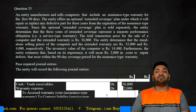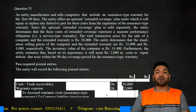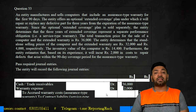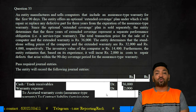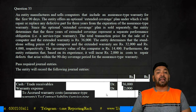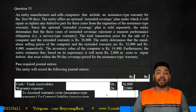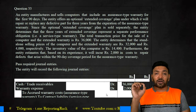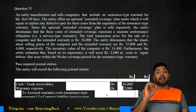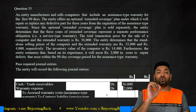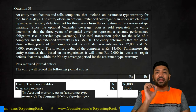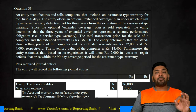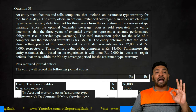The inventory value of the computer is 14,400. Furthermore, the entity estimates that based on their experience, it will incur 2,000 in the cost of repairing defects that arise within the 90-day coverage period for the assurance-type warranty. So during those 90 days of assurance warranty, there will be an expected cost of 2,000 rupees per unit. Now let's pass the required journal entries.